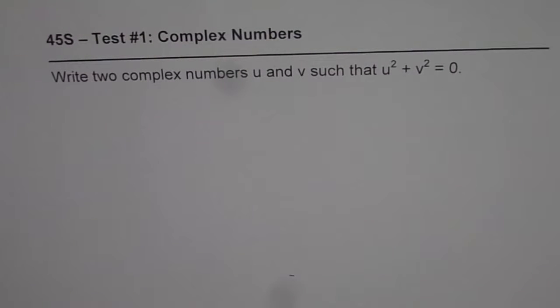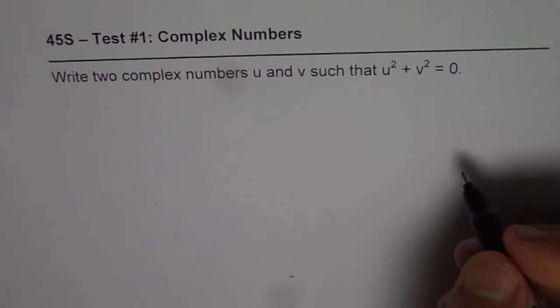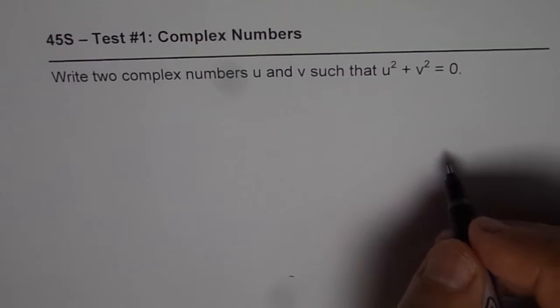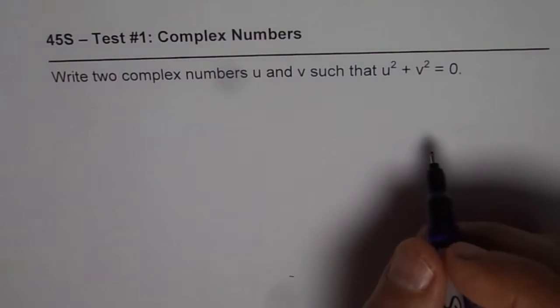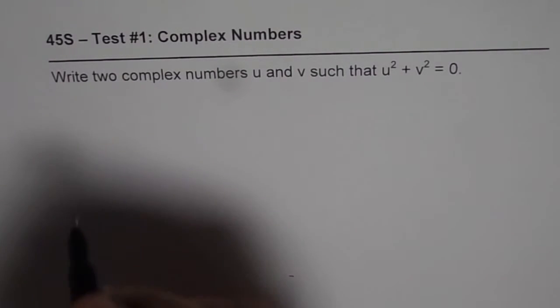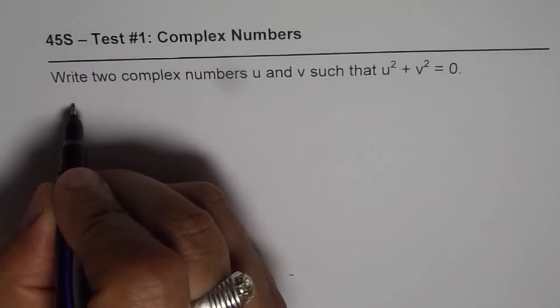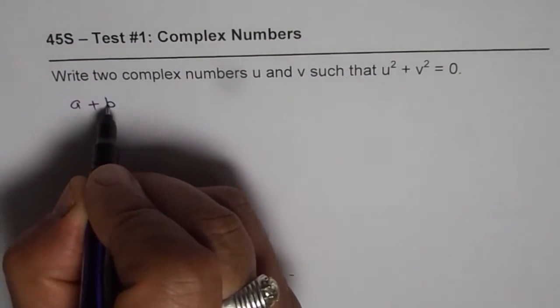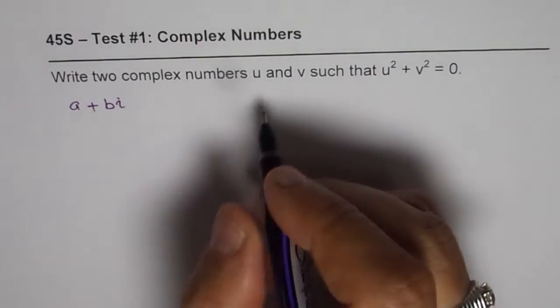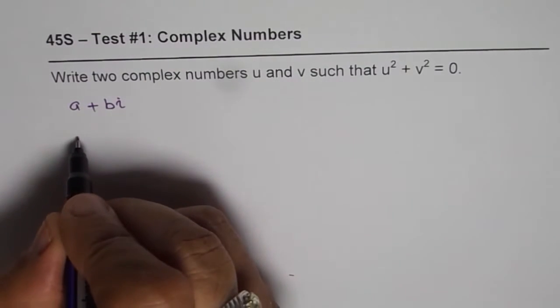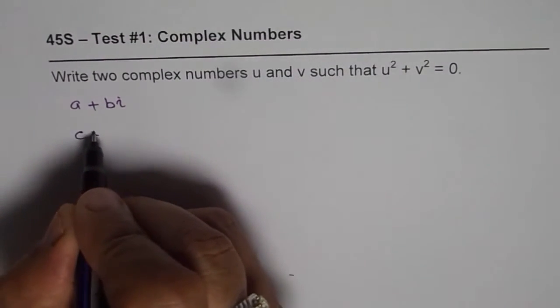Now, how to do this kind of equation? One of my suggestions is that we can work with general values and then figure out one answer. So, let us say our complex numbers are a + bi and the other one is c + di.